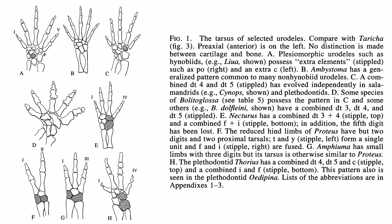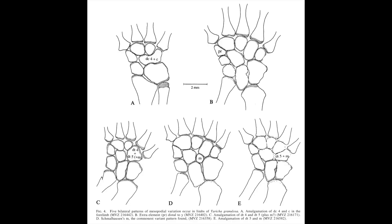One approach is to compare Taricha with other urodele species and find common themes in evolutionary biology. There are overall similarities, but also profound differences, often a consequence of some lineages having reduced and simplified their limbs. But Shubin and company are looking at variation within a single population of a single species — and that's where it gets interesting. About 70% of the newts showed the canonical pattern, a clear majority. However, 30% are different, and they're also important, since that variation is what evolution can work on.